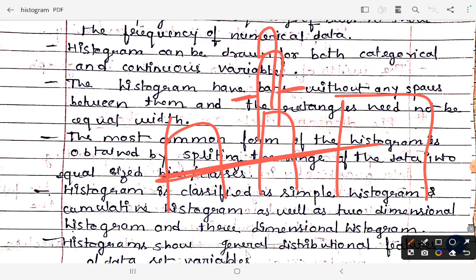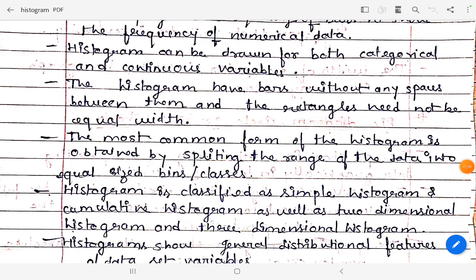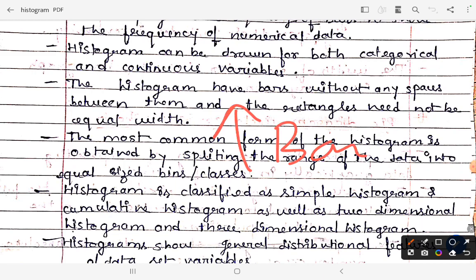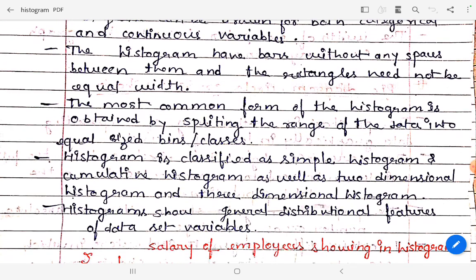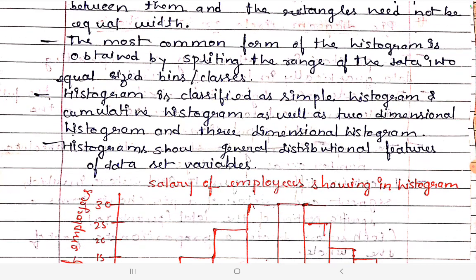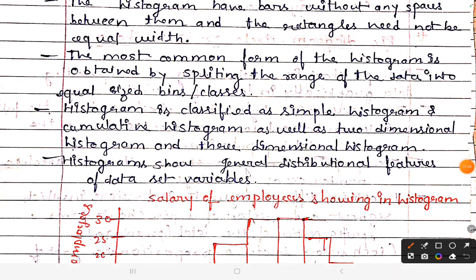The bars should always be equal in size. In the histogram, we don't have a gap — we represent category-wise or continuous variables. In the bar graph, however, we space the bars. So this is the difference between the histogram and the bar graph. The width is always equal, but the length of the histogram will change according to the data.